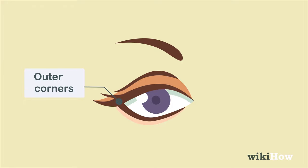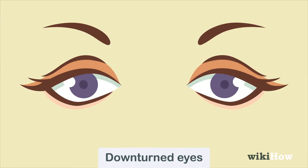If the outer corners of your eyes are lower than the inner corners, you have downturned eyes.